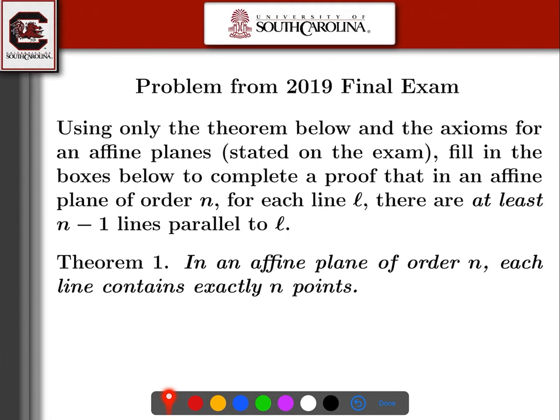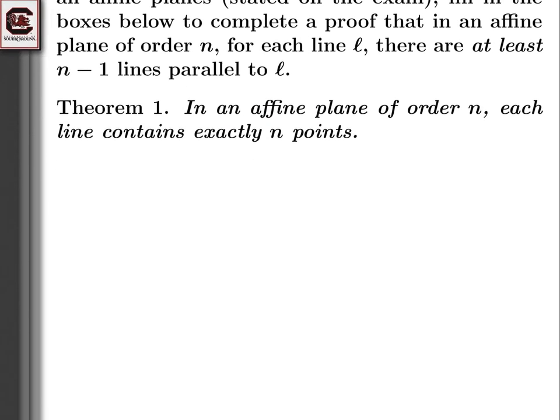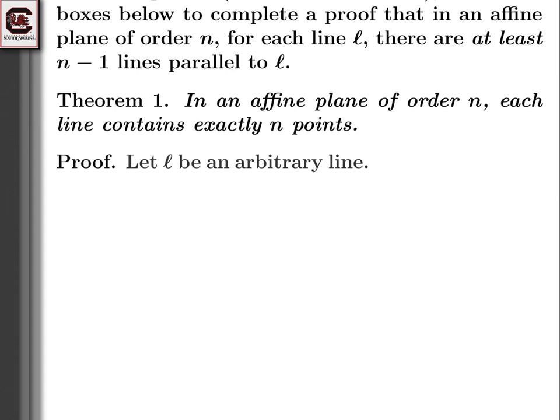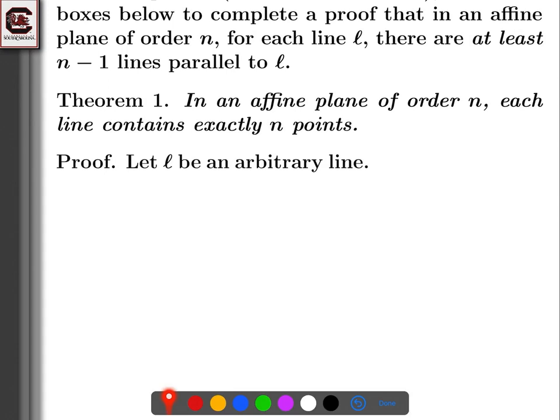We'll use Theorem 1 as well. Let L be an arbitrary line — this is important. We don't want to be taking L from the existence given by our axioms, for example using axiom A2. We want to take an arbitrary line L and show that this arbitrary line L has n minus 1 lines parallel to it, possibly more.